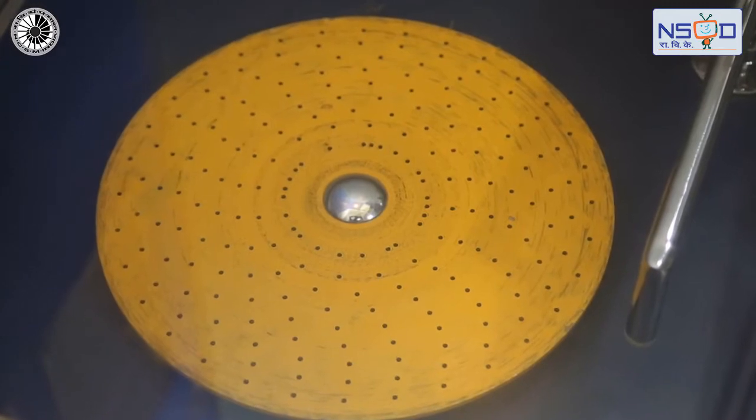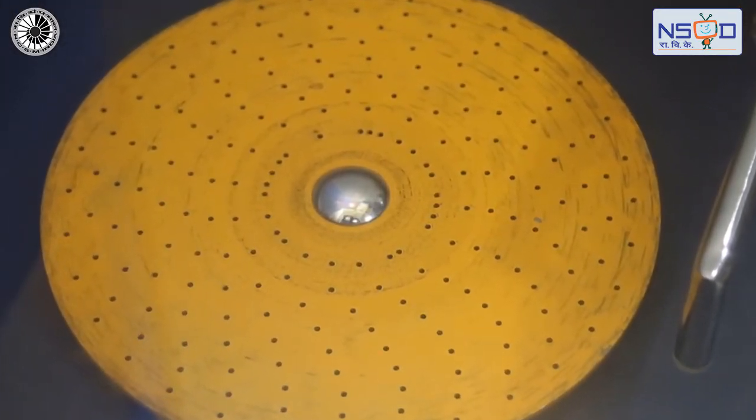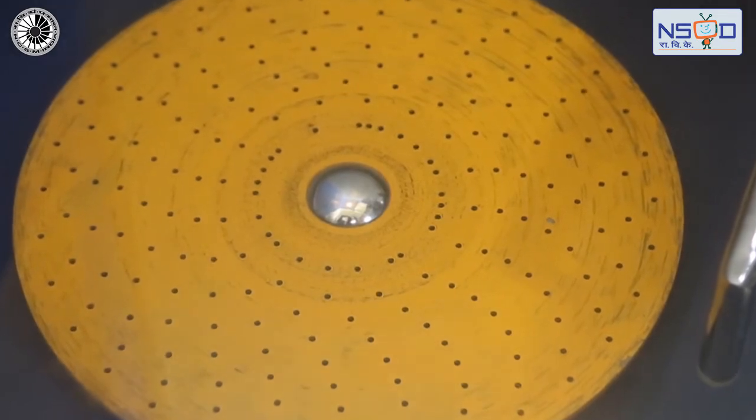Look at the disc with equally spaced holes arranged on eight circles and unequally spaced holes on the innermost circle.